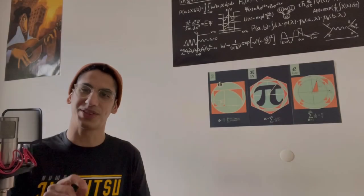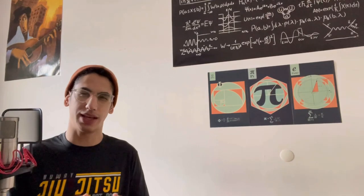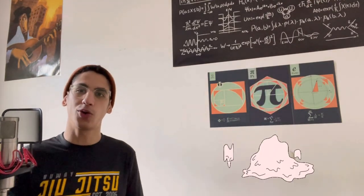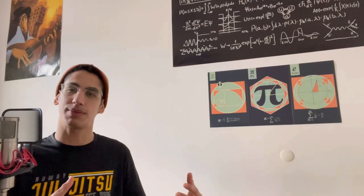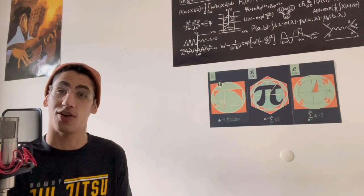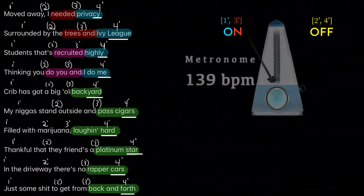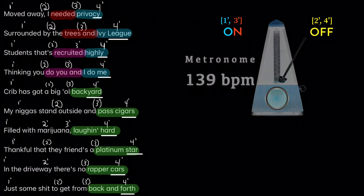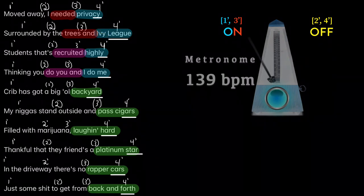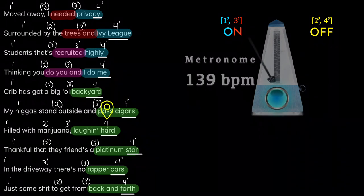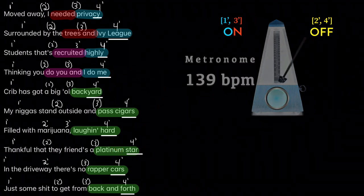But let's compare this to what happens next. We're almost like a phase transition from gas to liquid flow. Cole is going to switch his entire scheme to be purely emphasizing off beats. That's why I moved away. I needed privacy. Surrounded by the trees in Ivy League. Students that's recruited highly. Thinking you do you and I do me. Cribbers got a big old back of yard. My niggas stand outside and pass cigars. Filled with marijuana laughing hard. Thankful that they friends are platinum star. In the driveway there's no rapper cars. Just some shit to get from back and forth.